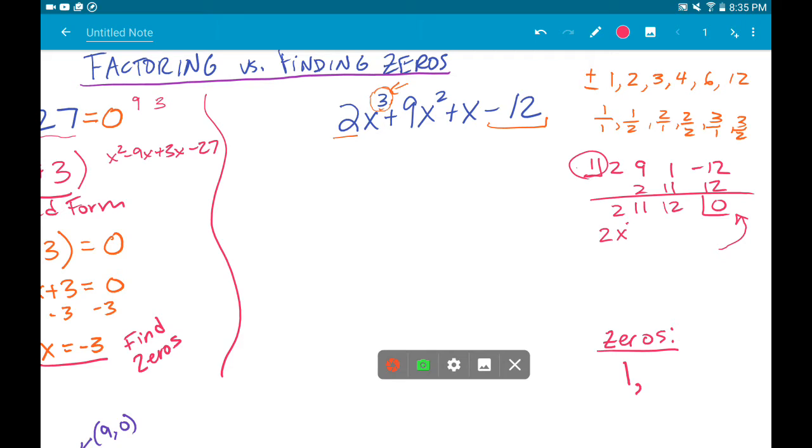What's left over, 2x squared plus 11x plus 12, this can help us find the other two zeros, right? This problem is very similar to the one that we did over here.